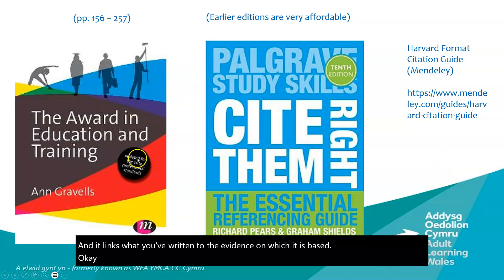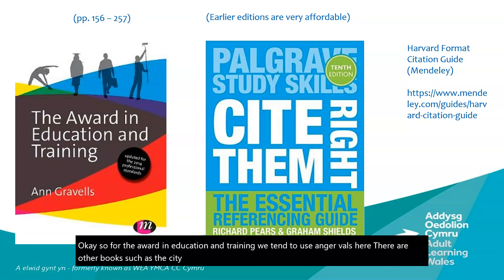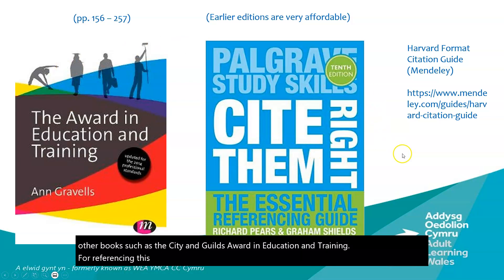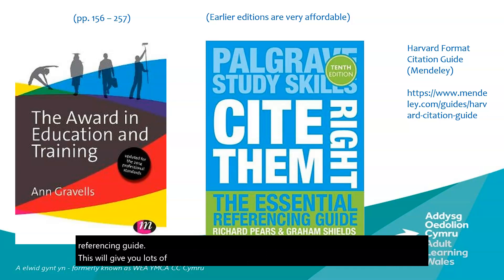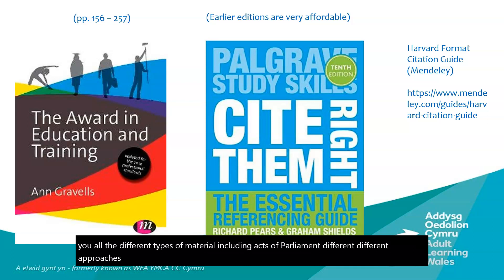For the Award in Education and Training, we tend to use Ang Revels. There are other books such as the City and Guilds Award in Education and Training. For referencing, a very good book is Palgrave Study Skills: Cite Them Right — The Essential Referencing Guide. This gives you lots of different types of referencing, and for Harvard referencing it covers all different types of material including Acts of Parliament, TV programmes, and more.